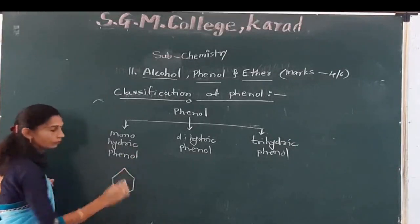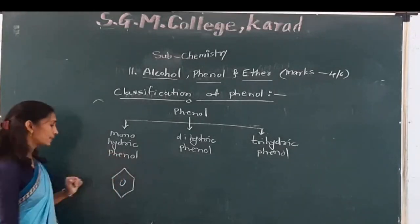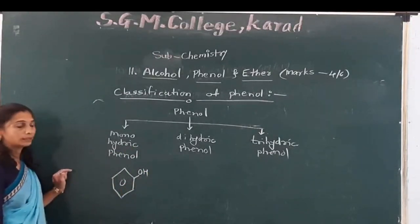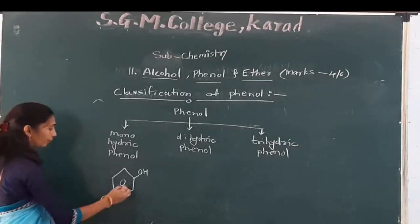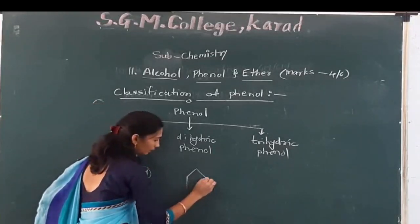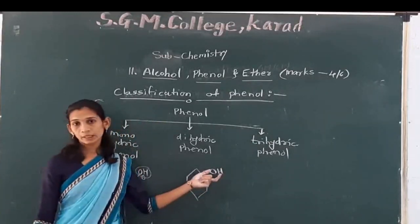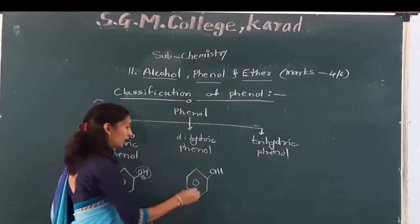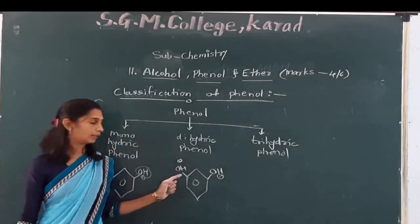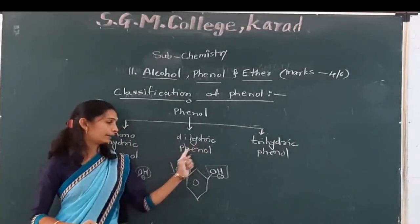First, our benzene ring — every carbon has one hydrogen, meaning six hydrogens are attached. One hydrogen is replaced by the functional group OH. That type of compound is known as monohydric phenol — only one functional group is attached. In the second one, dihydric: the benzene ring is the same and we attach the OH group at any two positions of the six carbons — there are two functional groups attached, two hydroxy groups. That type of compound is known as dihydric phenol.